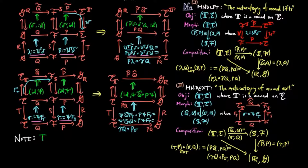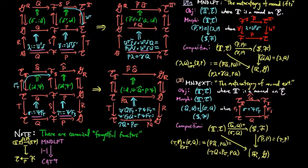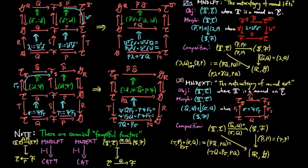Finally, note that there are canonical forgetful functors from the meta-category of monad lifts to the opposite meta-category of all categories, and from the meta-category of monad extensions to the meta-category of categories, where both project the second component. Note that these are one-categorical functors, and we are not yet discussing anything about the two-categorical structures involved.